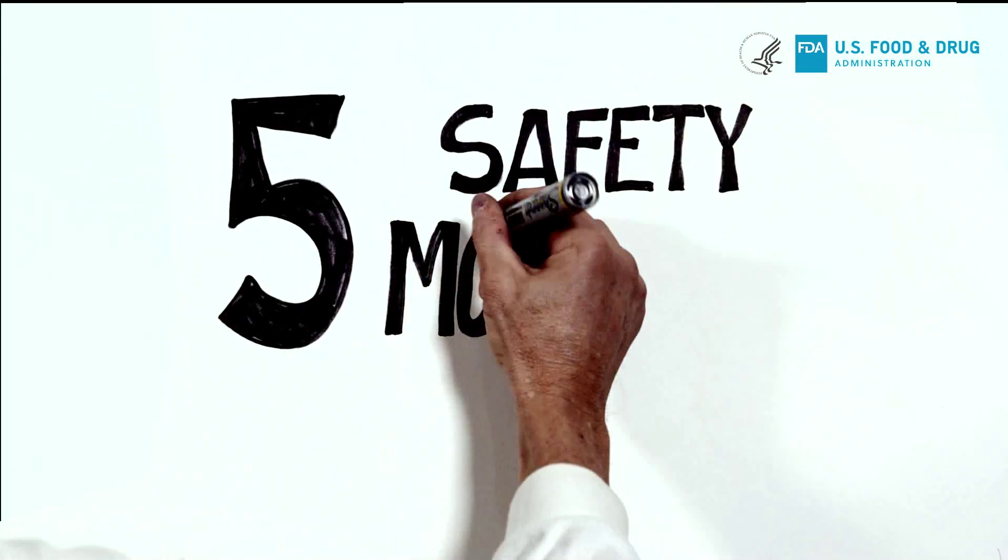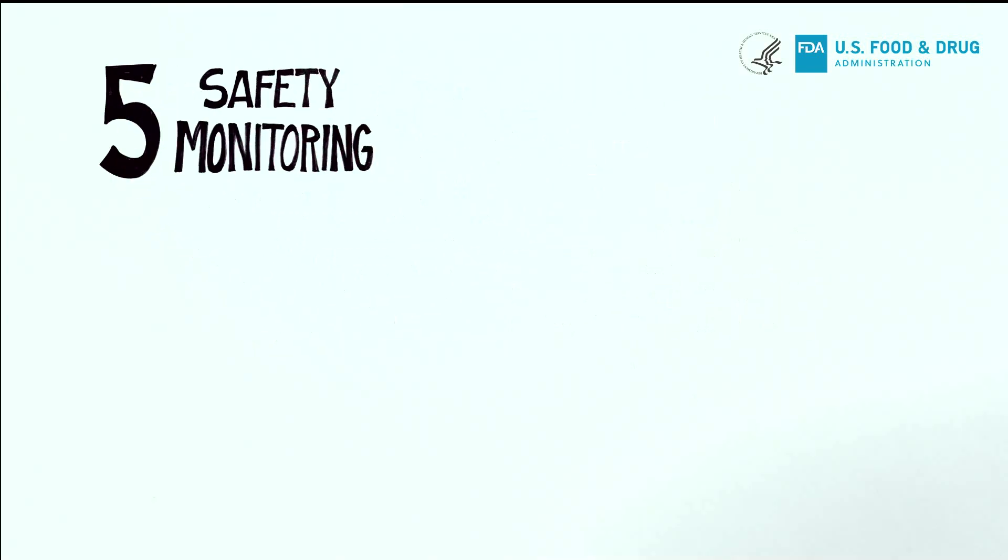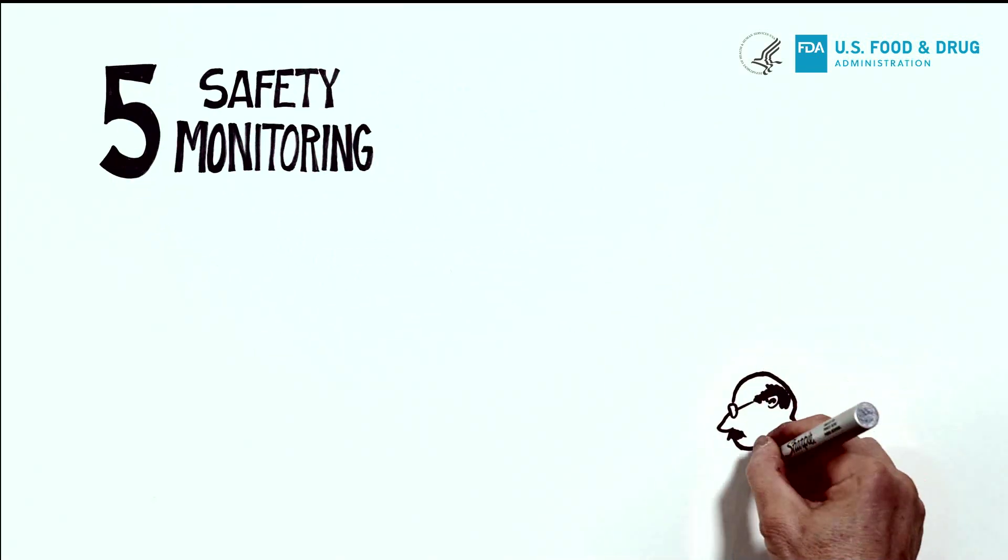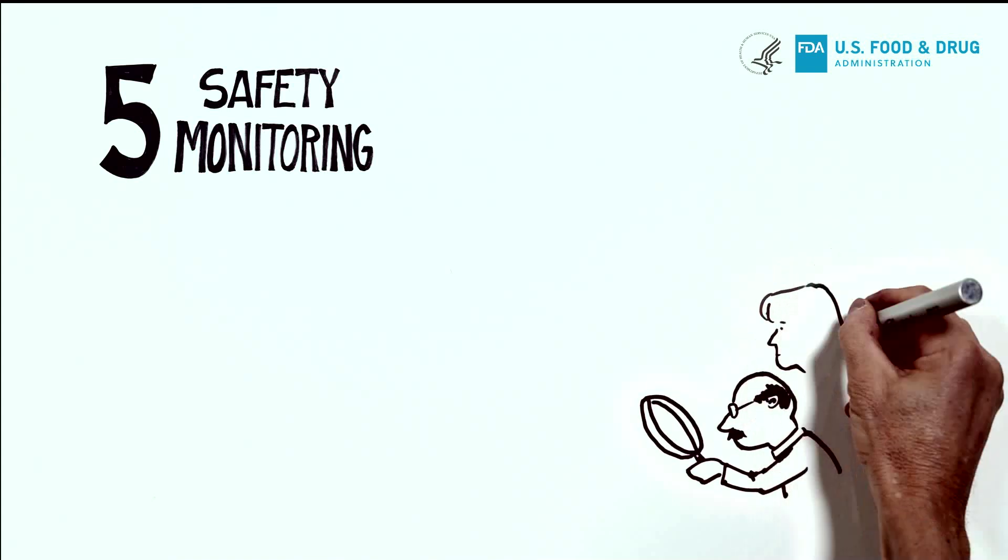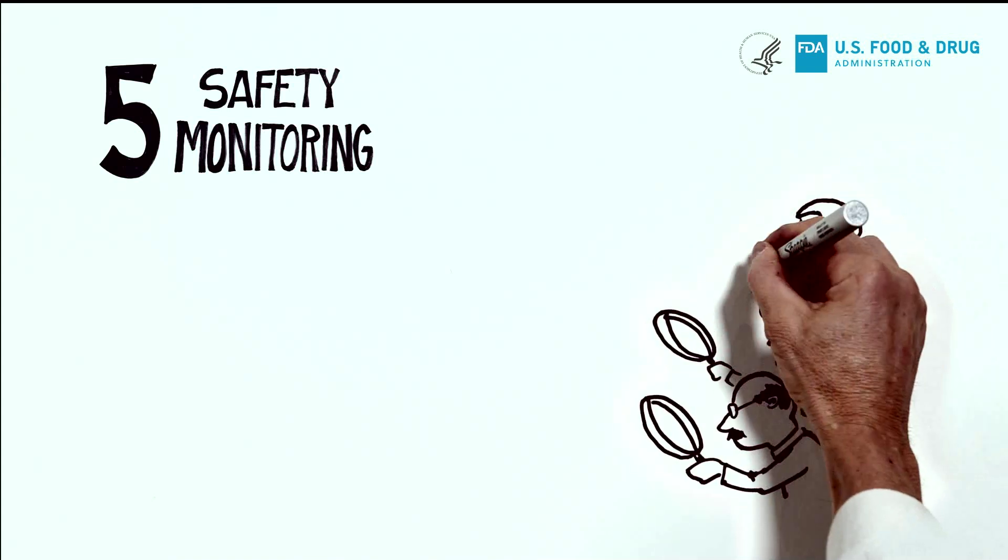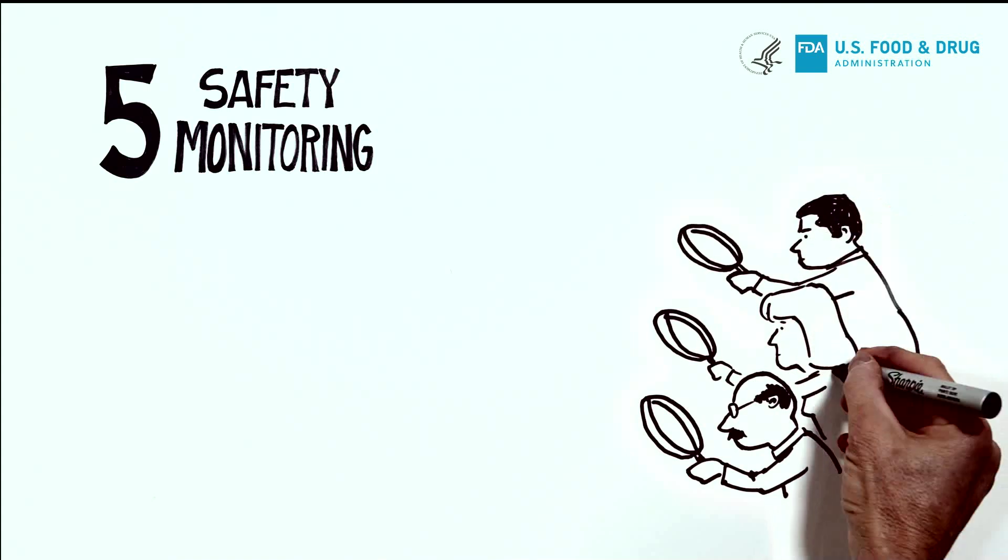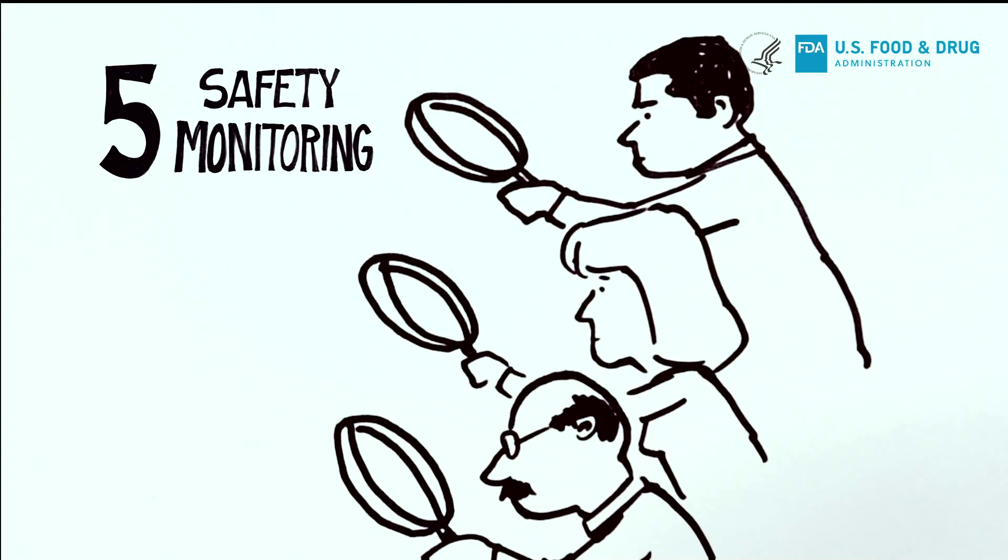Because it's not possible to predict all of a drug's effects during clinical trials, monitoring safety issues after drugs get on the market is critical. The role of FDA's post-marketing safety system is to detect adverse events and take regulatory action when needed.